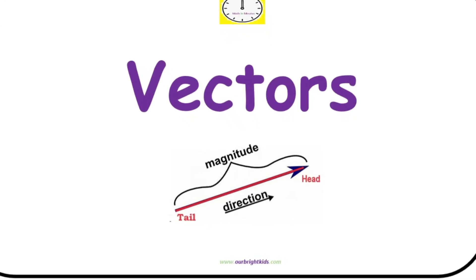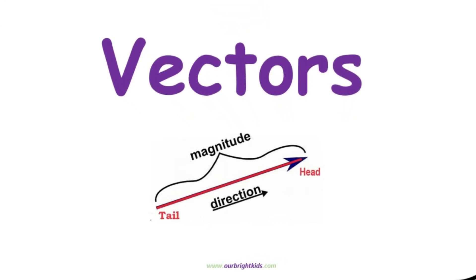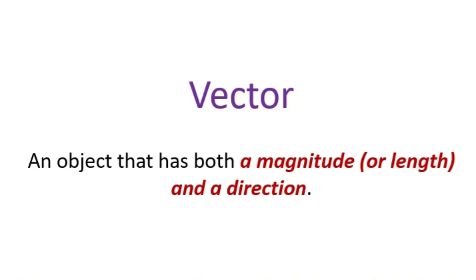In this Math in Minute video, we are going to go over vectors. So what is a vector? A vector is an object that has both a magnitude, which is like the length of the vector, and a direction.